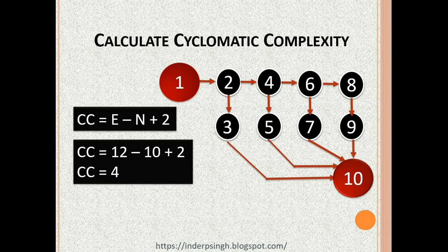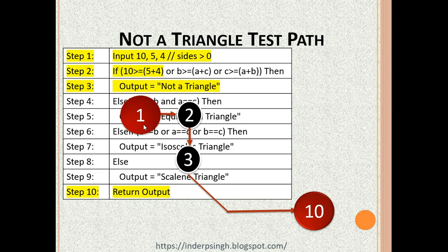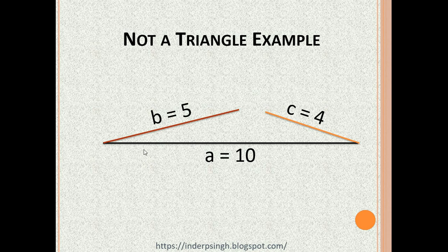Let us see each test path of execution. The first possibility is that it is not a triangle. Let sides A, B, and C be 10, 5, and 4. In step 2: 10 is greater than or equal to 5 plus 4, which is 9 — yes, one side is greater than the sum of the other two. Output is 'not a triangle', and from step 3 it goes to step 10. The path of execution is 1, 2, 3, and 10.